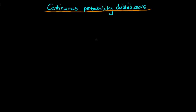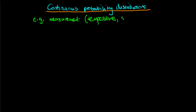In this video I want to provide an introduction to continuous probability distributions. Continuous probability distributions are used to represent variables which are measured on a continuous scale. Examples of that might be the temperature of an individual's body, the returns of a stock, or the length of time you have to wait for a taxi to appear. You can also represent time on a continuous scale, and hence continuous probability distributions are the thing to use.